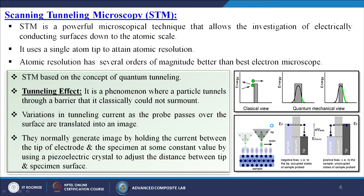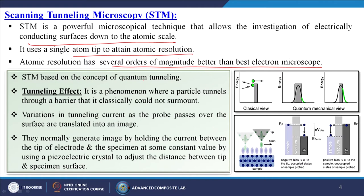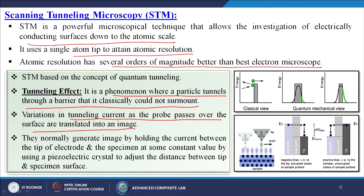First we are going to discuss about scanning tunneling microscopy, STM. STM is a powerful microscopical technique that allows investigation of electrically conducting surfaces down to the atomic scale. It uses a single atom tip to attain atomic resolution, which is several orders of magnitude better than the best electron microscope. STM is based on the concept of quantum tunneling — a phenomenon where a particle tunnels through a barrier that it classically could not surmount. Variations in tunneling current as the probe passes over the surface are translated into an image, normally by holding the current constant and using piezoelectric crystals to adjust the distance between tip and specimen surface.